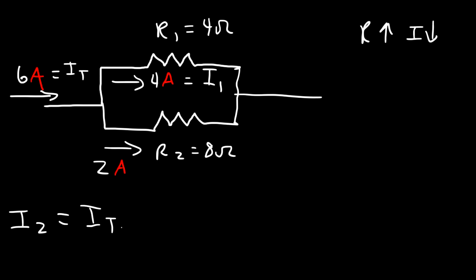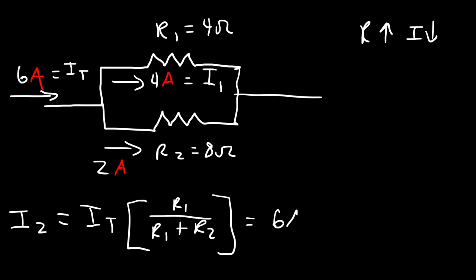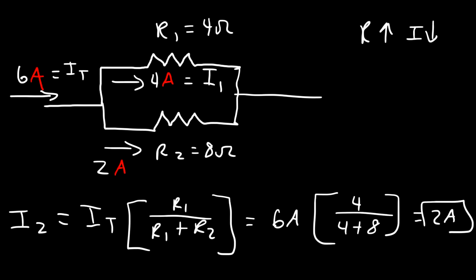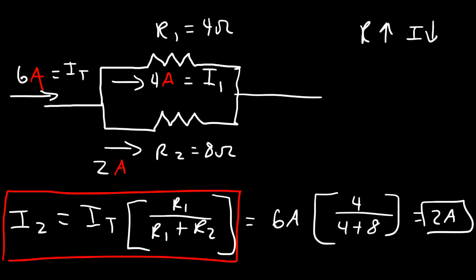For I2, we use a similar formula: I2 equals the total current times R1 divided by R1 plus R2. So it's 6 amps times 4 divided by (4 plus 8), which is 6 times 4 divided by 12, giving a current of 2 amps. Whenever current divides into two branches, you can use this formula if you know each branch resistance.